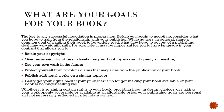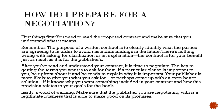Whether it is retaining certain rights to your book, providing input in design choices, or making your work openly accessible or available at an affordable price, your publishing goals are personal and not necessarily reflected in a template contract. First things first — you need to read the proposed contract and make sure you understand what it means. The purpose of a written contract is to clearly identify what the parties are agreeing to in order to avoid misunderstandings in the future. There's nothing wrong with asking for clarification. After you've read and understood your contract, it is time to negotiate. The key to getting the terms you want is to ask for them. If a particular clause is important to you, be upfront about it and be ready to explain why it is important. Your publisher is more likely to give you what you ask for if it knows why you want something included and how it relates to your goals for the book.